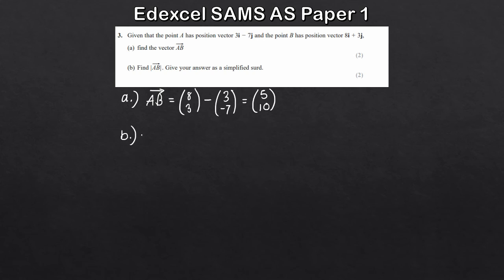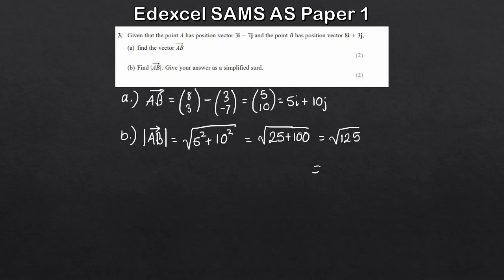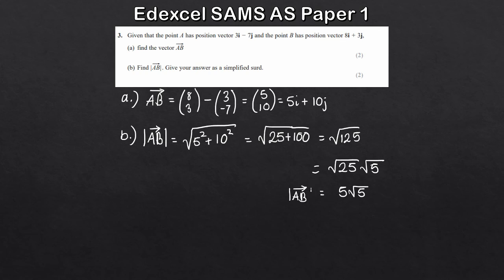And that's our answer for part A. For part B, to find the magnitude of AB — 5i plus 10j — we square each individual term and take the square root of the sum. So that's the square root of 5 squared plus 10 squared, which is root of 25 plus 100, giving root 125. Simplifying: root 25 times root 5, and root 25 is 5, so our final answer is 5 root 5 for the magnitude of AB.